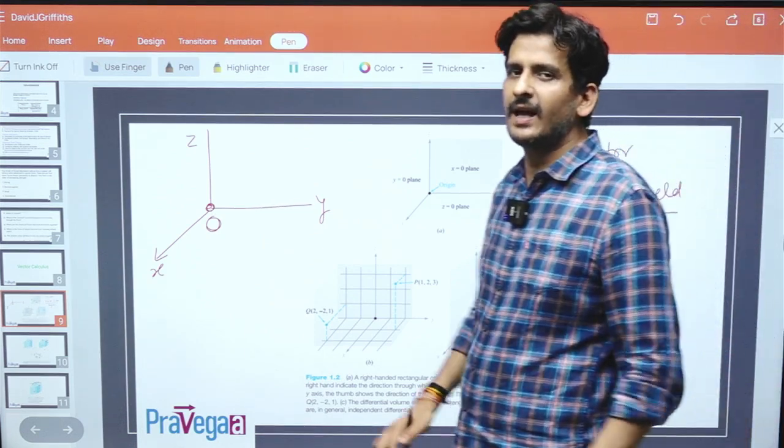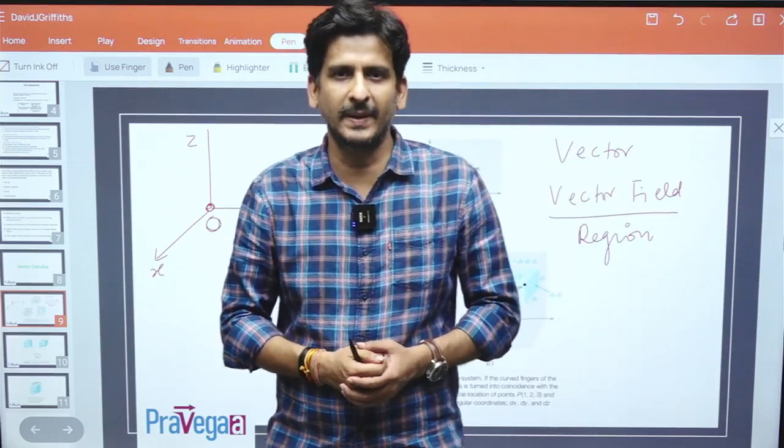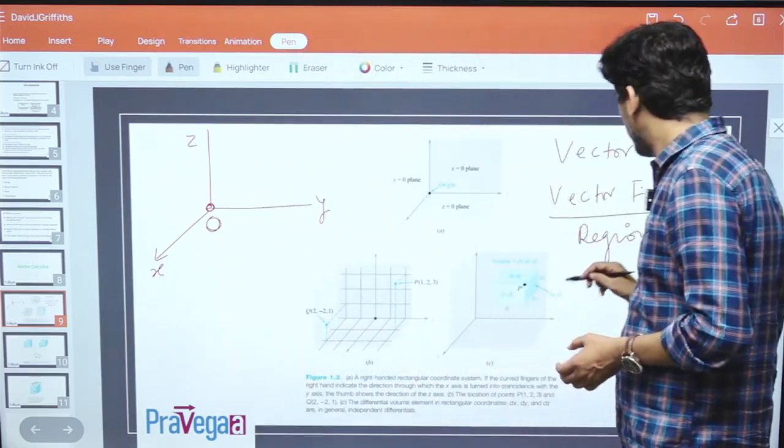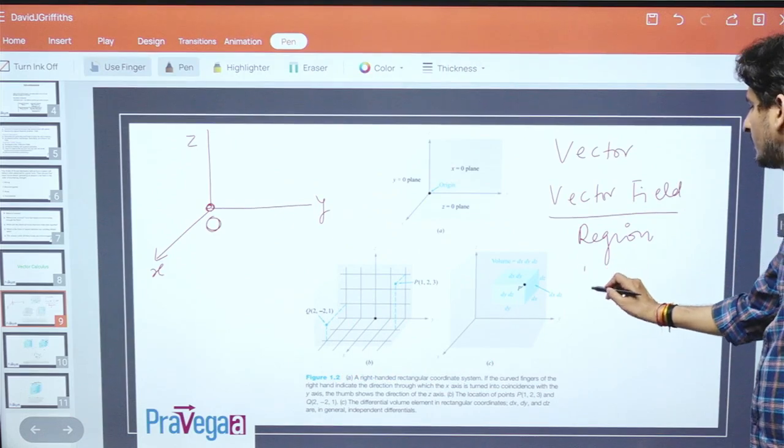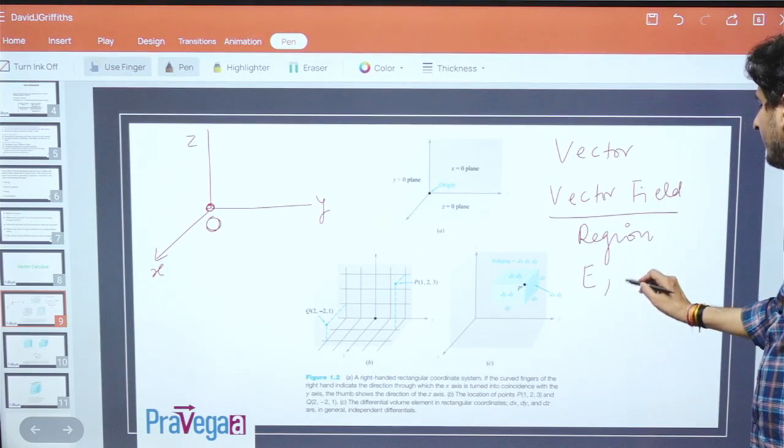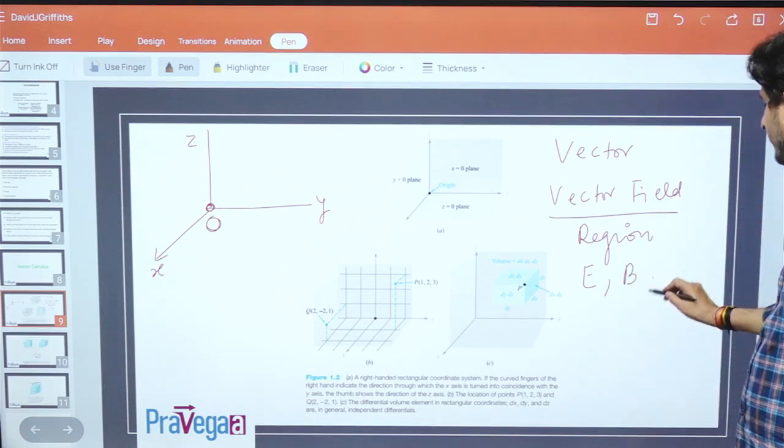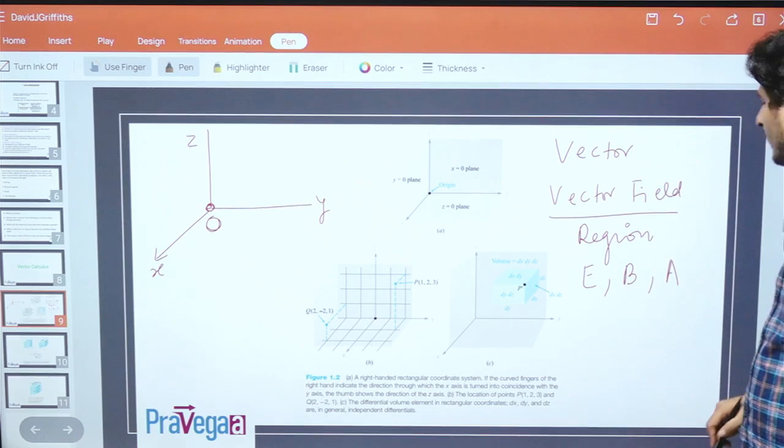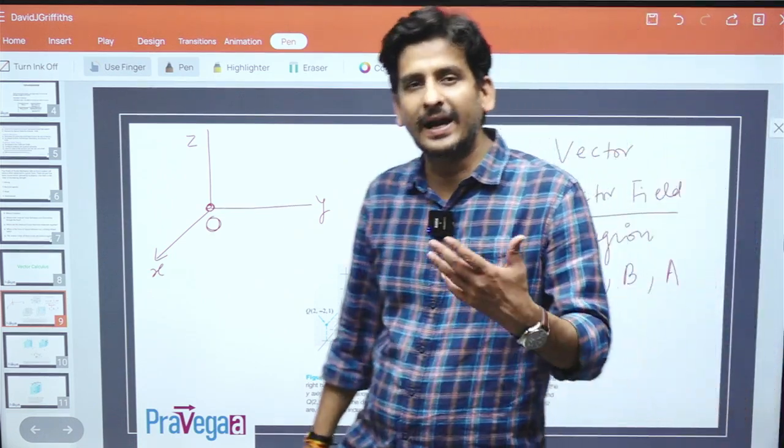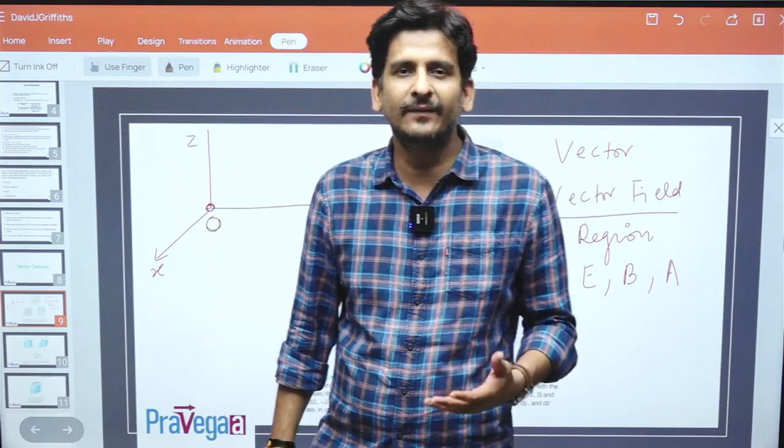But this vector field is the property of the region around the space. This is more important because quantities like electric field, magnetic field, magnetic vector potential—all these are actually vector fields.